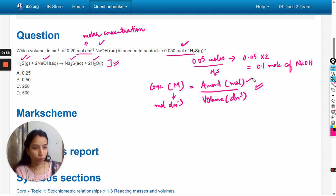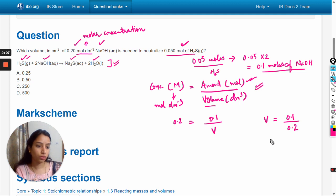From this formula we can calculate the volume, because amount we have already calculated as 0.1 moles and concentration is already given in the question. So we will put the values here: 0.2 equals 0.1 divided by volume. Volume is equal to 0.1 divided by 0.2, so it will be 0.5 decimeter cube.